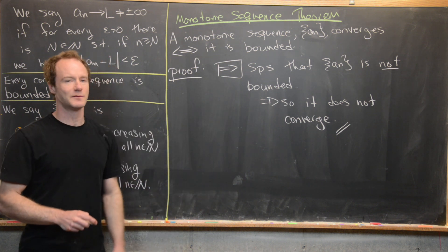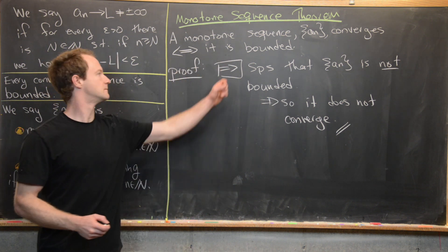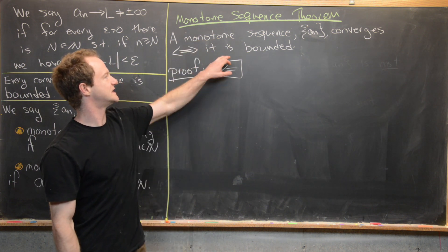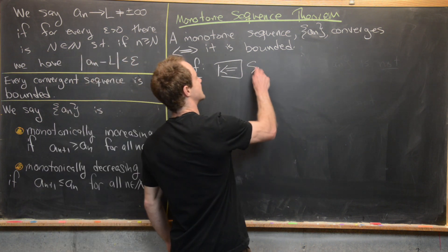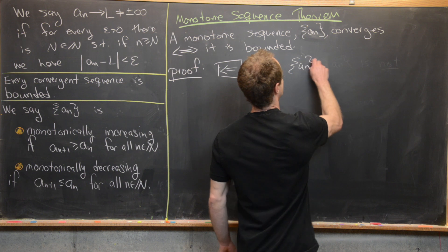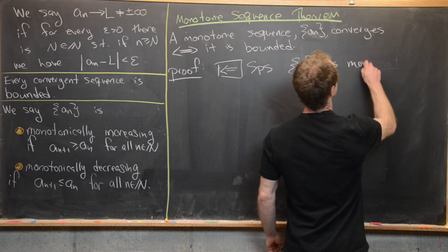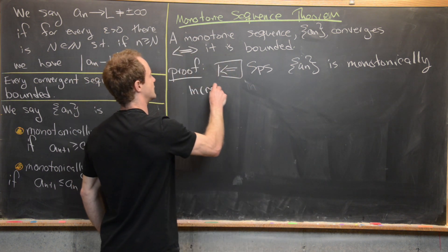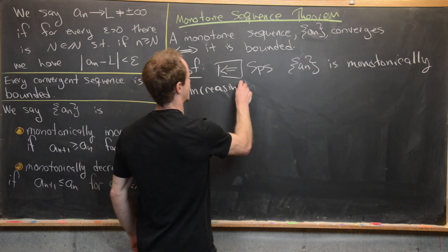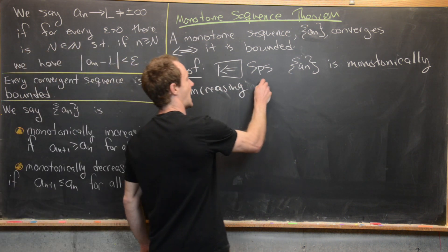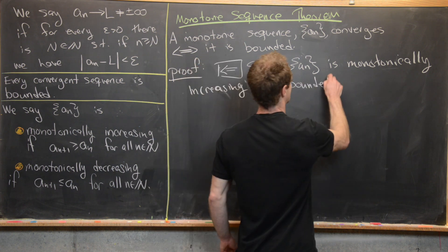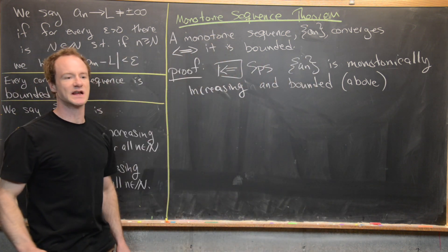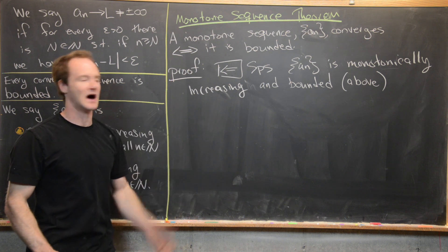The other direction is a bit more lengthy, so let's start fresh. We're going to suppose that we have a monotone sequence that is bounded. We'll do the increasing case — the decreasing case is very similar, so I'll leave it to you to check. So let's say a_n is increasing and bounded above. If it's monotonically increasing, the important bounding happens above, not below.